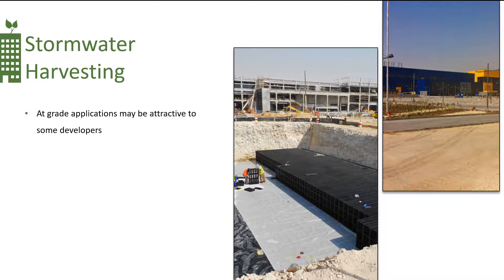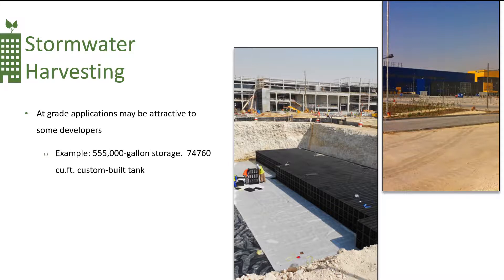Lastly, managing stormwater on the roof provides many benefits to the building owner and the environment. However, at-grade applications are attractive to some developers. Shown here is a construction site where the water retention is in front of IKEA — a 555,000-gallon storage in a custom-built tank with surface parking over it.